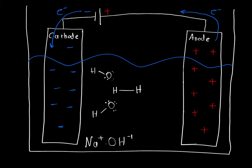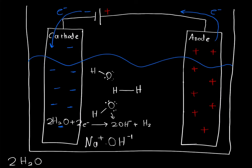So what we originally started with was two water molecules, plus two electrons coming in at the cathode, and that yielded us two hydroxides and hydrogen gas. I'm going to write that reaction at the bottom, and we'll come back to it to show how we can add this reaction to another reaction and see the end product.